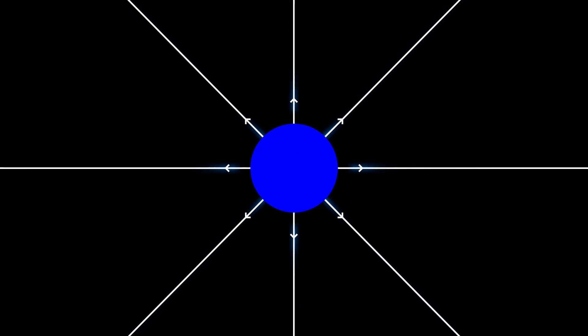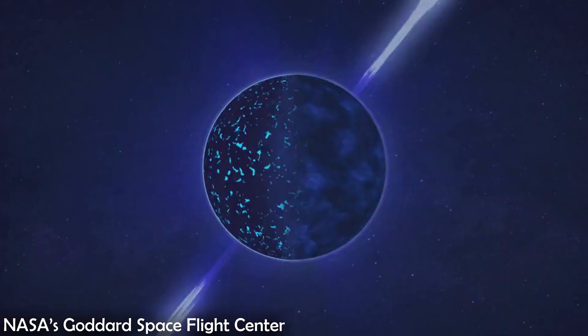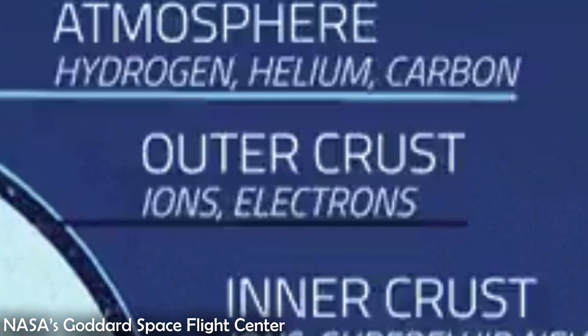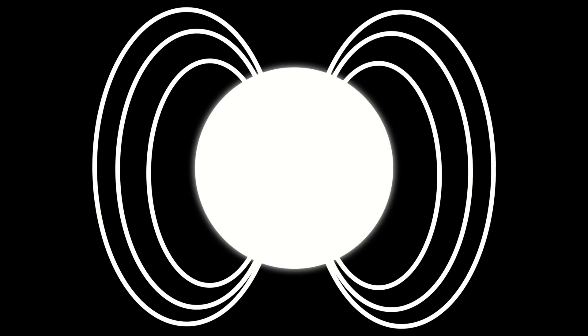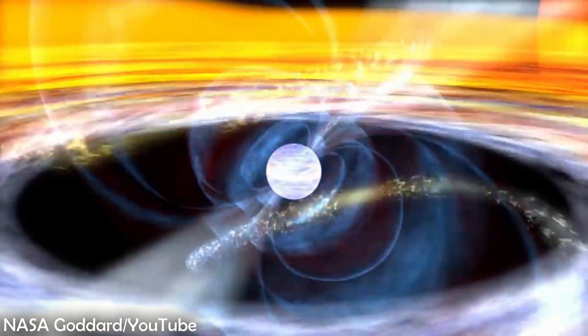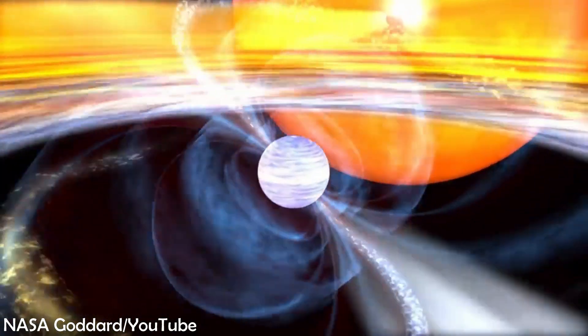As said earlier, neutron stars have great magnetic fields. Moving electric charges produce magnetic fields and since the crust of neutron stars contain electrons and ions, which are electrically charged, electromagnetic currents excite these charged particles and make them spin and move around a lot, which gives them their magnetic field. Almost all stars spin and this spin also contributes to their magnetic field.